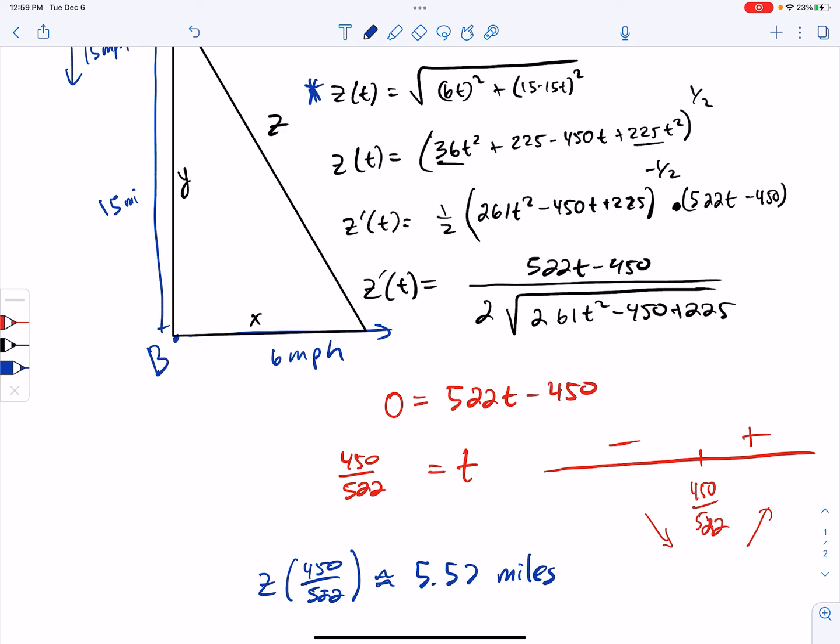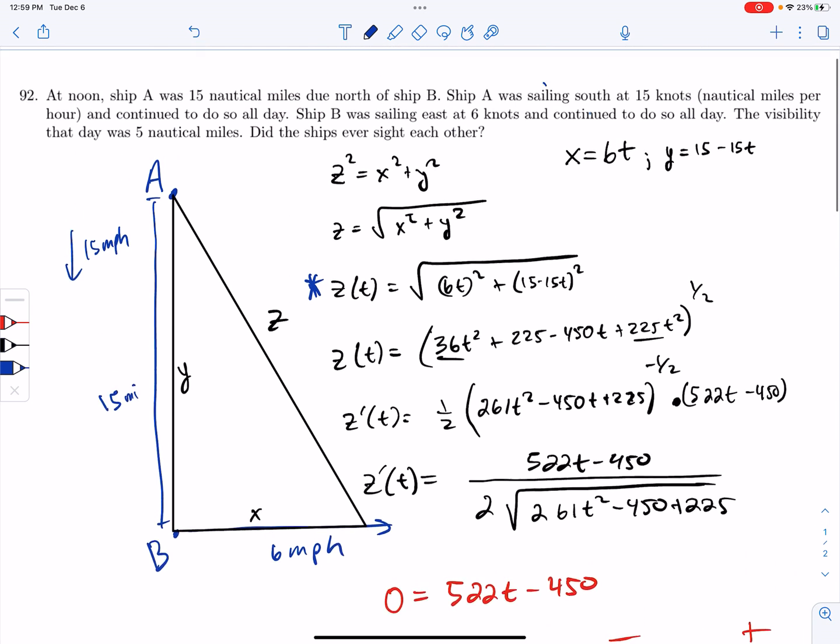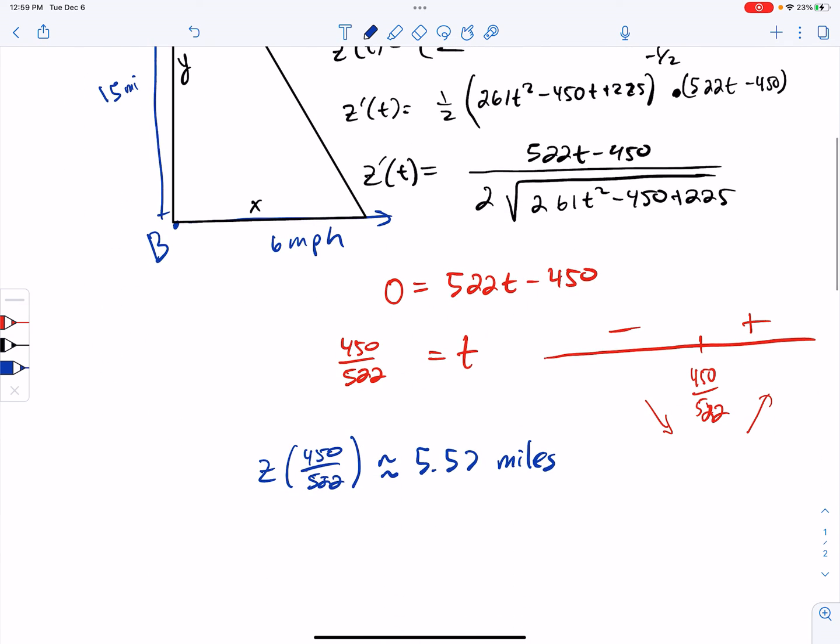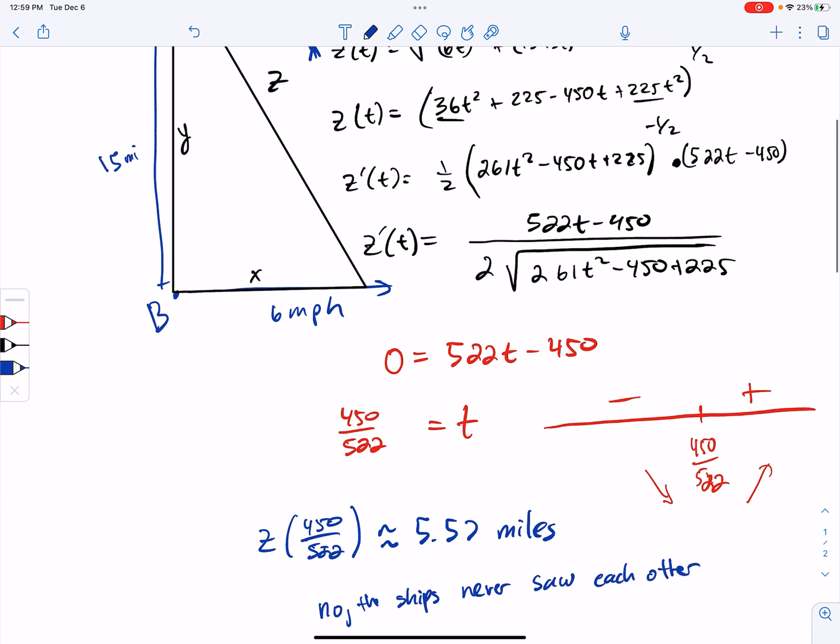Okay. So what that tells us is that the ships were, the closest the ships ever were to each other was 5.57 miles away. And we wanted to know where they ever five miles away. So the answer is no. So nope, the ships never saw each other. All right. So that's how you do that one.